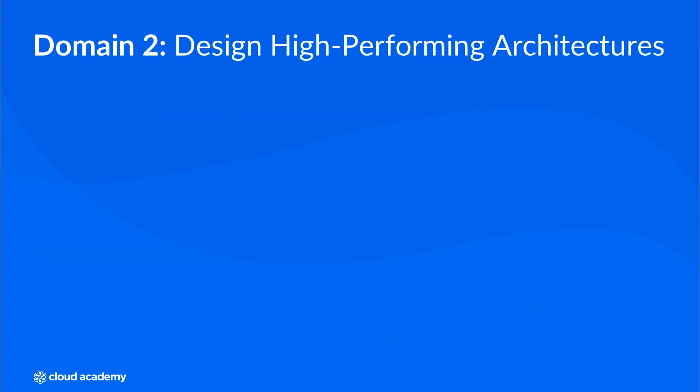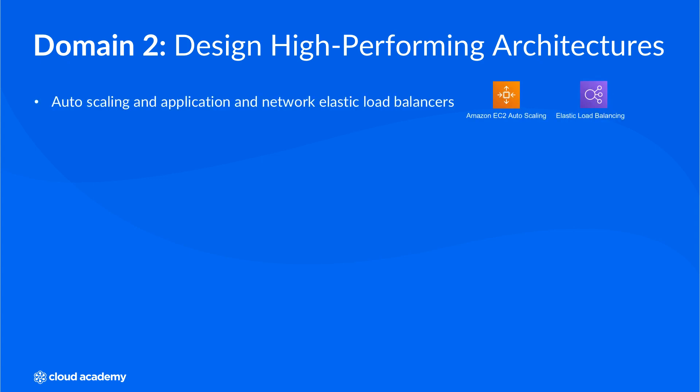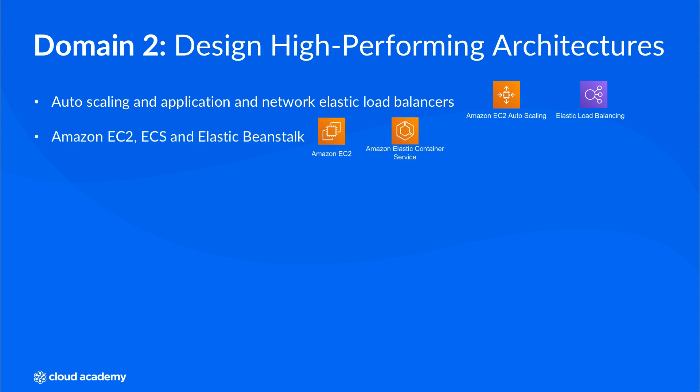Looking at Domain 2, you must understand how to design high-performing architectures across the compute, storage, networking, and database categories. The key areas of focus here is to ensure that you know which services to use and configure to implement elastic and scalable solutions for compute workloads. So we will cover the configuration of auto-scaling and application and network load balancers, in addition to services such as Amazon EC2, Amazon Elastic Container Service, and AWS Elastic Beanstalk.